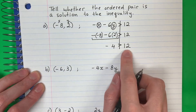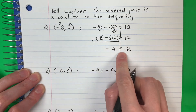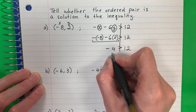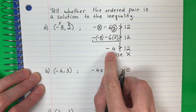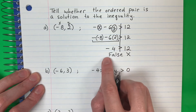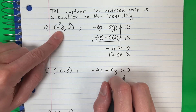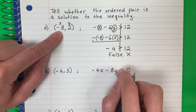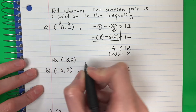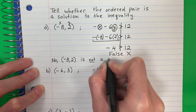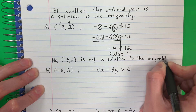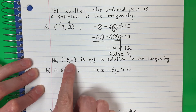Let's see if this is true or false. Vamos a ver si este es verdad o falso. Negative 4 is greater than 12. Negativo 4 es mayor que 12. Is this true or false? Verdad o falso? This is false. A negative number cannot be greater than a positive number. Un número negativo no puede ser mayor que un número positivo. So this is false — if your answer is false, then this is not a solution. Si la respuesta es falsa, este no es una solución. So I'm going to write: No, (-8, 2) is not a solution to the inequality. No, negativo 8, 2, no es una solución.